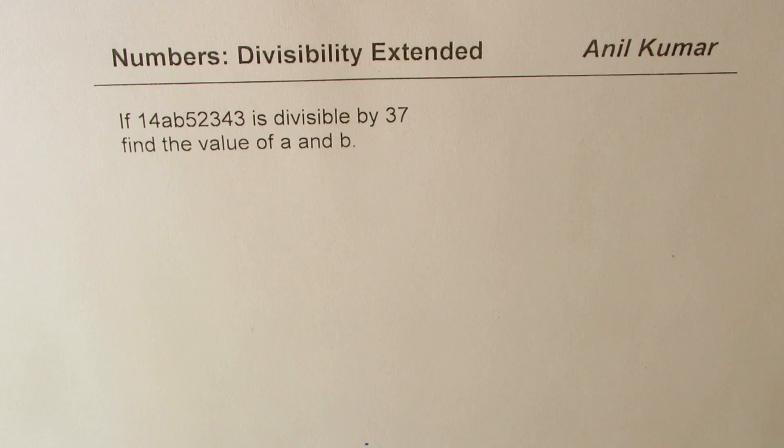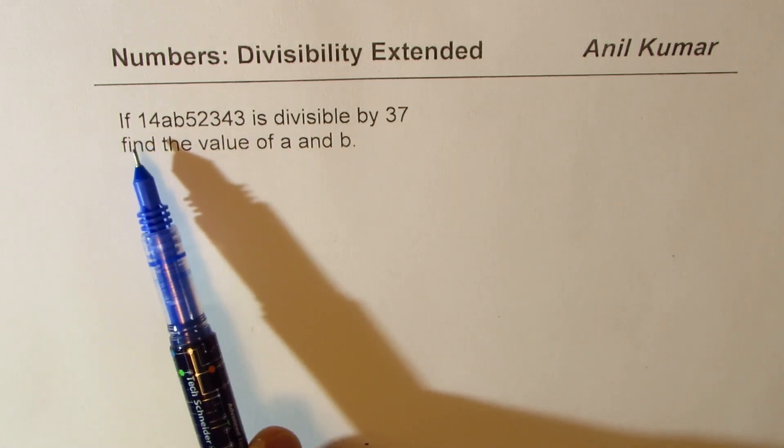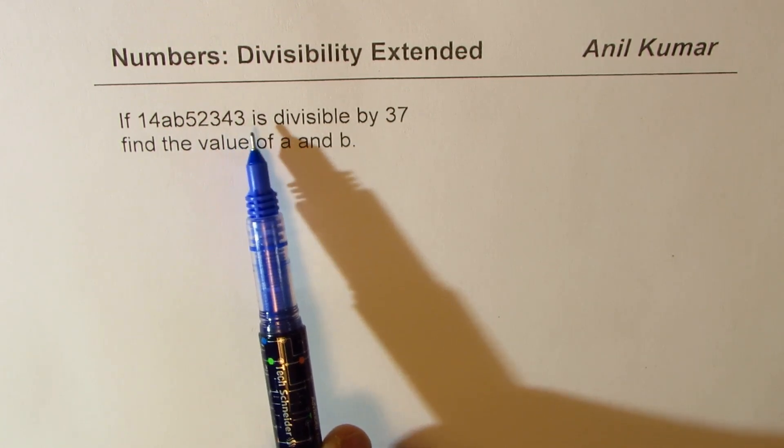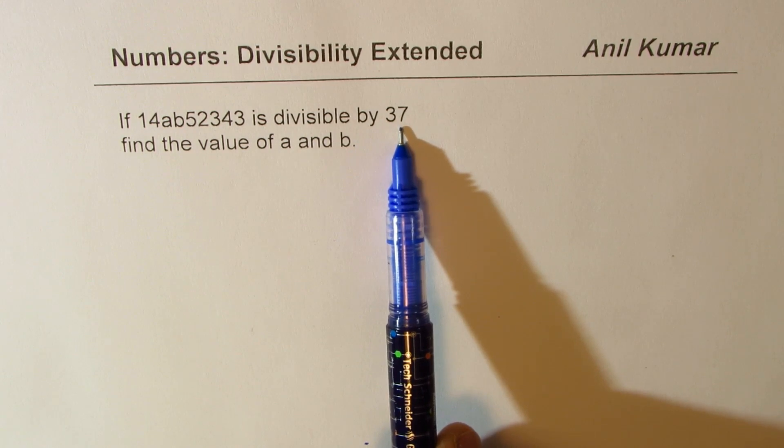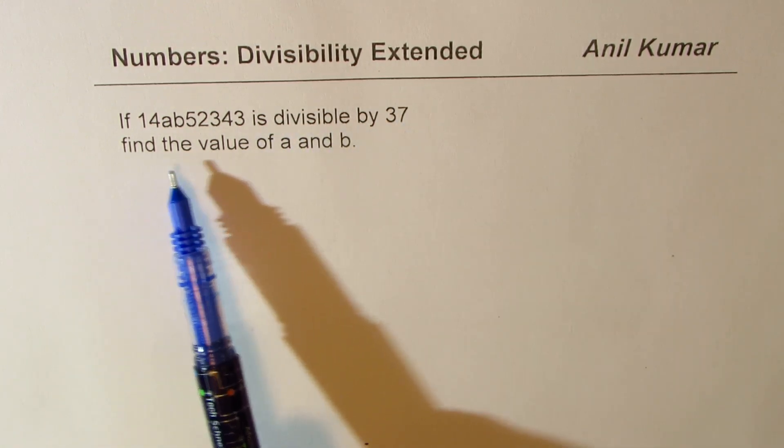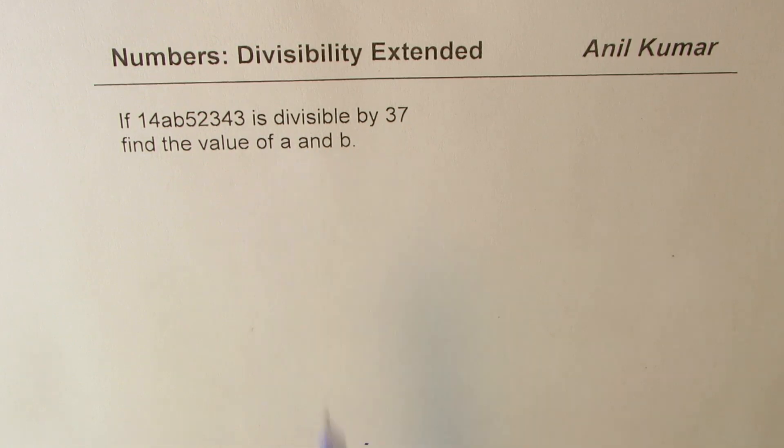I don't know from where you got it. The question here is, if 14AB52343 is divisible by 37, find the value of A and B. Amazing.